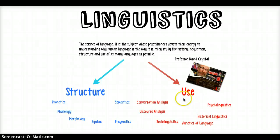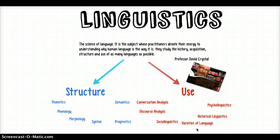On the use side, there's psycholinguistics — how we develop and acquire language. Historical linguistics — how languages change and develop over time. Varieties of language: slang, creoles, pidgins. These are a fascinating area of study, but not terribly relevant to what we're going to do.